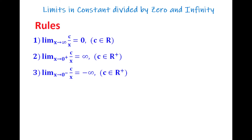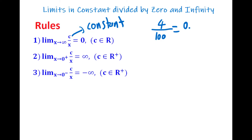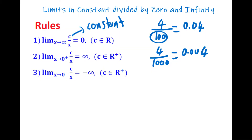Before starting, let's go over the rules. The first rule: c means constant. If you divide any constant by x when x goes to infinity, the result is zero. For example, if the constant is 4, then 4 divided by x — when x is 100, we get 0.04. When x is 1000, we get 0.004. As you can see, the value decreases.